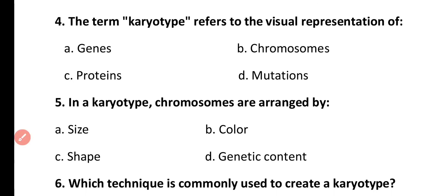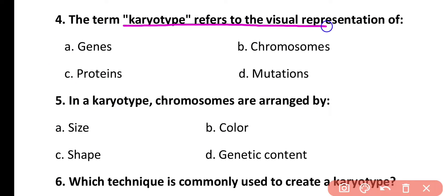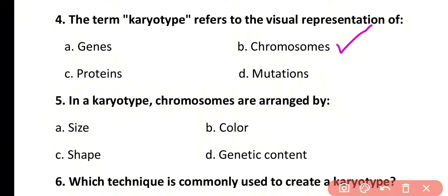Question number 4. The term karyotype refers to the visual representation of: genes, chromosomes, proteins, or mutation. Correct answer is option B. Karyotype is the visual representation or arrangement of chromosomes.